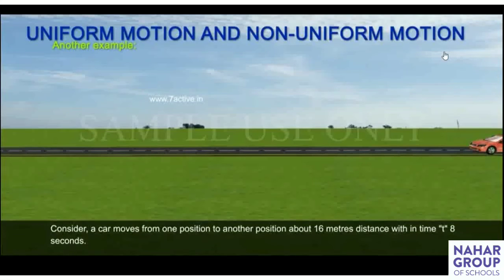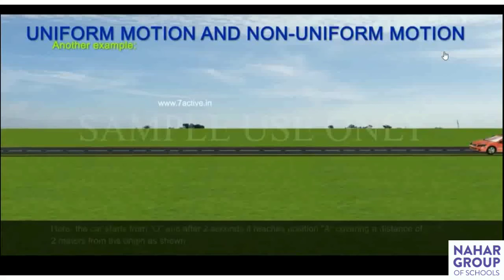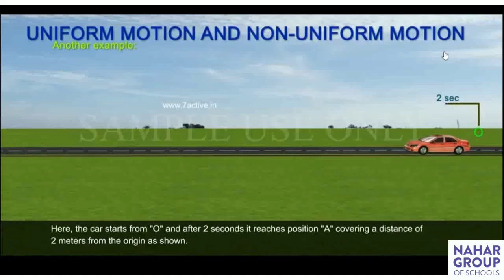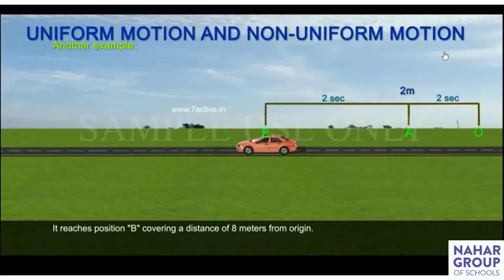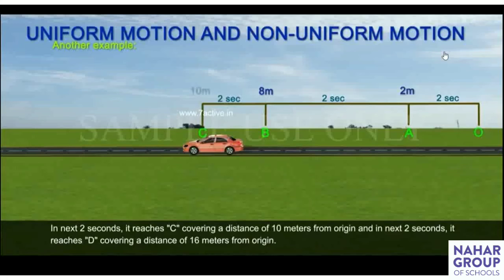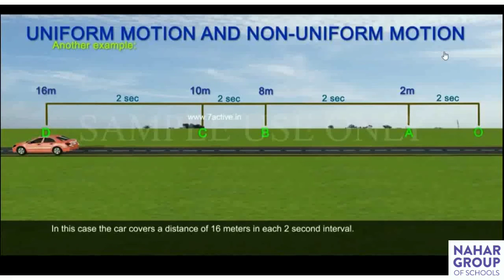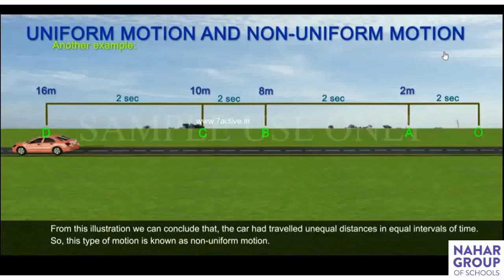Now let's take another example for non-uniform motion. Consider a car that moves about 16 meters in 8 seconds. The car starts from O; after 2 seconds it reaches A covering 2 meters, then B covering 8 meters from origin, then C covering 10 meters, and then D covering 16 meters. The distances covered in each 2-second interval are unequal. From this illustration, the car travels unequal distance in equal intervals of time, so this type of motion is non-uniform motion.